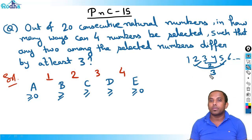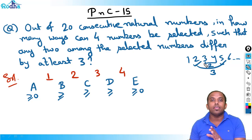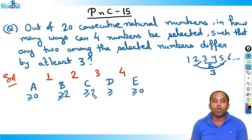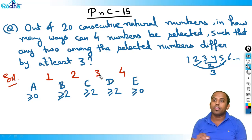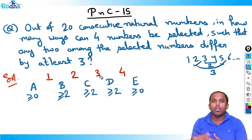That's why this question is given here. So the gap — if the numbers differ by at least three, then the gap should be at least two. So b, c, d will all have at least two. This is one basic mistake you can make with such questions.